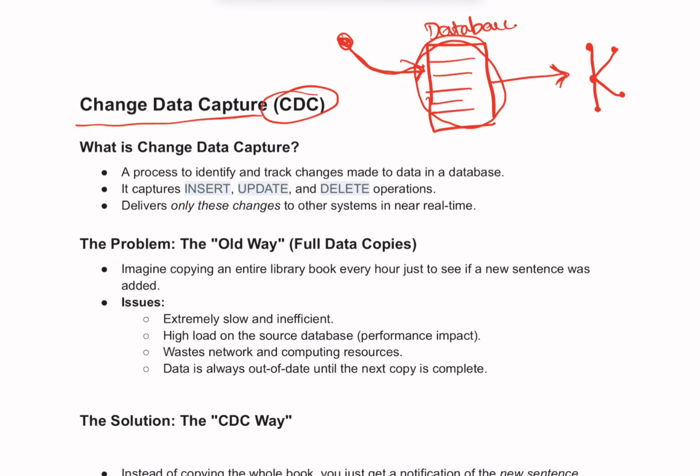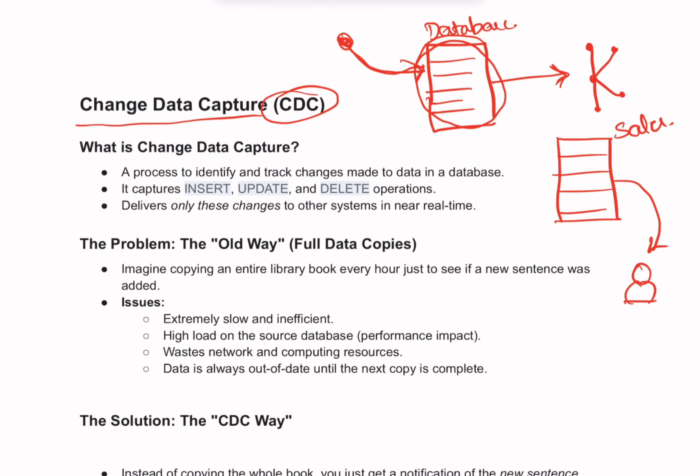To give you a more concrete example, imagine a book which contains all of your company's sales records. In the beginning you will have very few records, but imagine another department like analytics needs an up-to-date copy of these records every single hour — so the analytics department needs the updated sales records hourly.